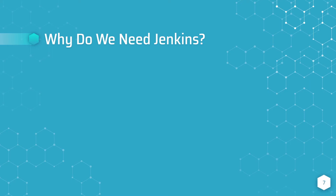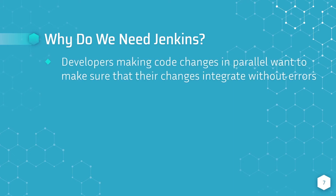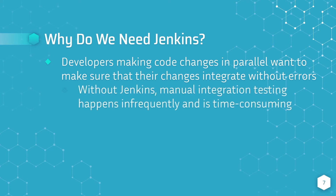To understand this, let's take a look at a couple of key objectives for developers. The first objective is that developers who are working in parallel want to make sure that the features they're developing integrate into the latest version of the codebase without errors. Without Jenkins, manual integration of changes happens infrequently, and because it doesn't happen frequently, there's often a large backlog of changes pending to be merged. This causes the manual integration process to be time consuming — we often refer to it as integration hell.